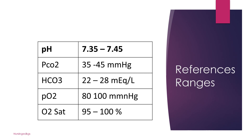Each component will have its own reference range. For example, pH normally falls between 7.35 to 7.45, PaCO2 should fall between 35 to 45 mmHg, and bicarb 22 to 28 mEq/L. It's very important that we know these reference ranges so we're able to identify deviations from normal and know when the patient will need interventions. Factors such as age, underlying health conditions, and medications can impact these values, so a thorough patient history is important for accurate interpretation.